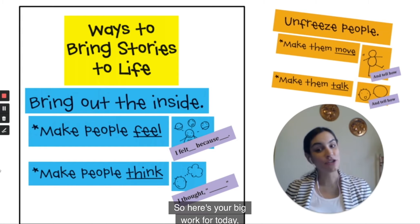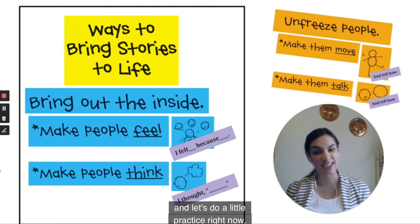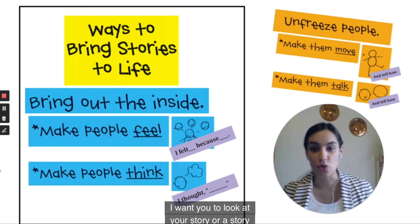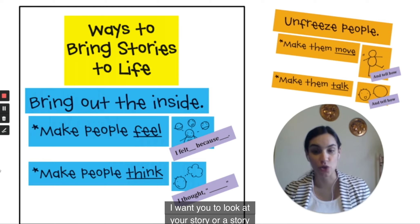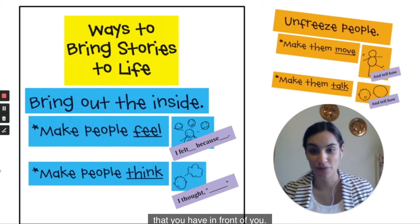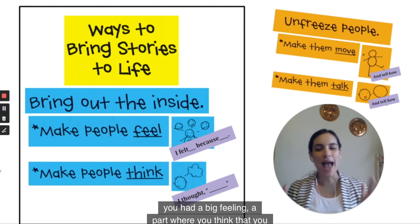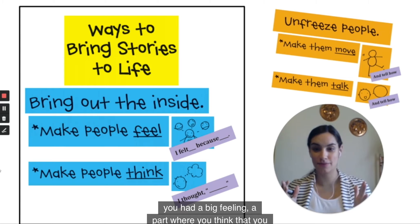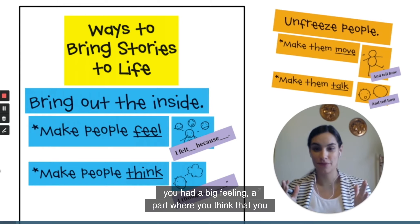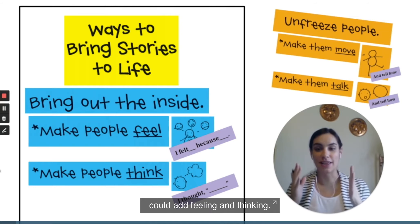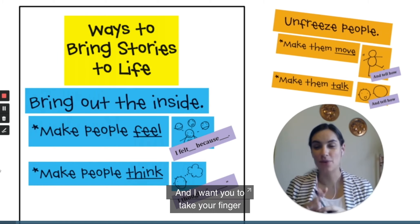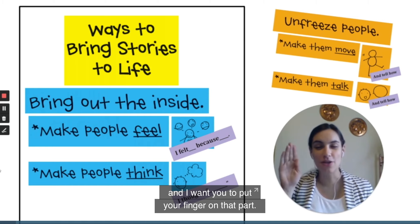Here's your big work for today — let's do a little practice right now. I want you to look at your story, or a story that you have in front of you, and find a part where you had a big feeling — a part where you think you could add feeling and thinking. I want you to take your finger and put it on that part.